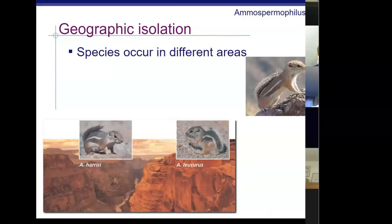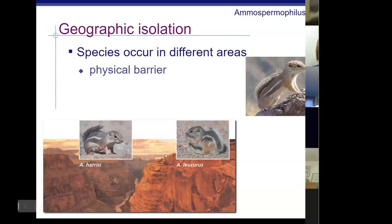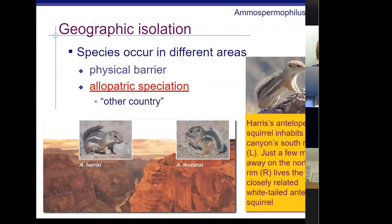One of the most common examples — appearing on ACT, MME, and PSAT tests — is the squirrels of the Grand Canyon. The Kaibab squirrel lives on the north rim and the Abert squirrel on the south rim. The canyon is a mile high and a couple of miles wide. As the canyon formed over time, it separated these two squirrel groups, giving them separate evolutionary paths. This is a classic example of allopatric speciation.